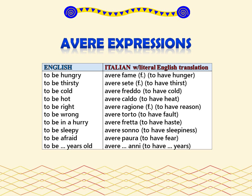The gender of some nouns is indicated where it is not obvious. To be hungry — avere fame. To be thirsty — avere sete. To be cold — avere freddo. To be hot — avere caldo. To be right — avere ragione. To be wrong — avere torto. To be in a hurry — avere fretta.